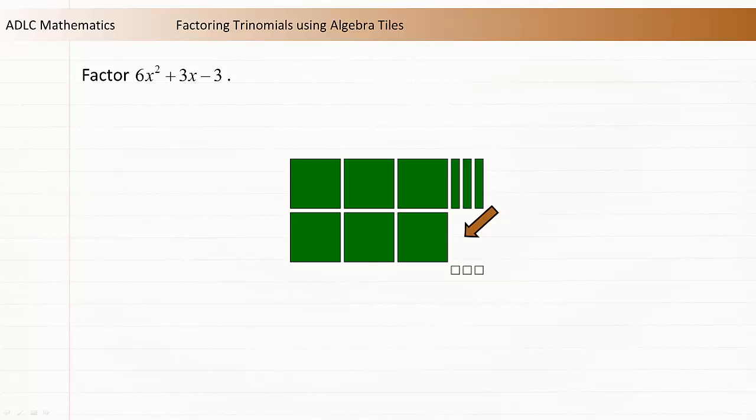We need 3x tiles here to complete the upper right rectangle, and we need 3x tiles here to complete the bottom left rectangle. This means we can introduce zero pairs of x tiles to complete the entire rectangle. Remember that a zero pair is a positive and a negative tile pair of the same size. Because they are equal to zero when added together, they can be added to an expression without changing its value.